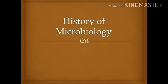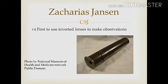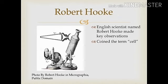The exact origins of the microscope are debated. However, there are three key individuals. Zacharias Janssen is the first to use inverted lenses to make observations of his surroundings. More notably is Robert Hooke, an English scientist who made key observations of various organisms, including fungi. One of Hooke's most significant contributions is that he coined the term 'cell.'